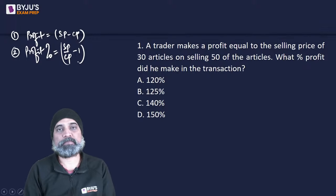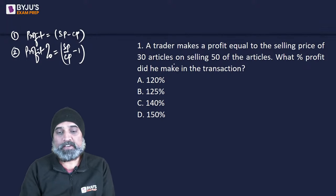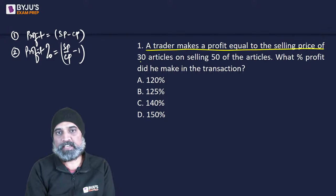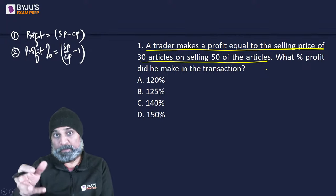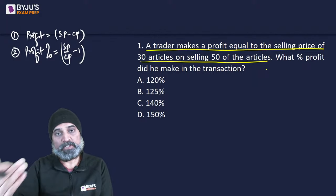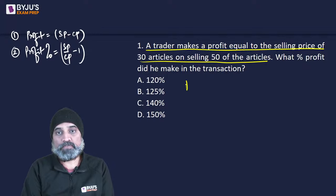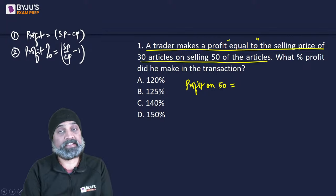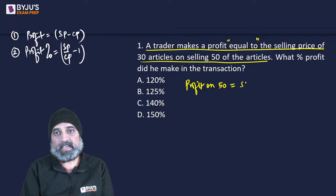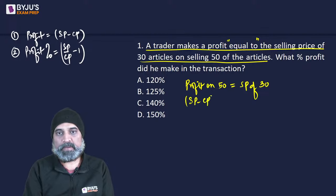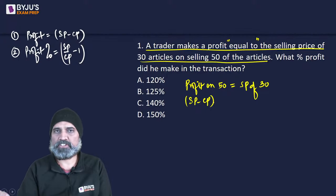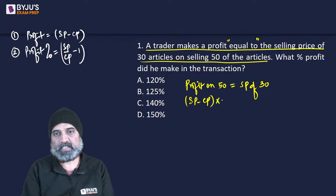Profit percentage is given as (SP/CP) minus 1. Reading the question carefully: when we sell 50 articles, the profit made on those 50 articles is equal to the selling price of 30 articles. So we can say profit made on 50 articles equals selling price of 30 articles. Profit is SP minus CP, and 'on' is replaced with multiplication.